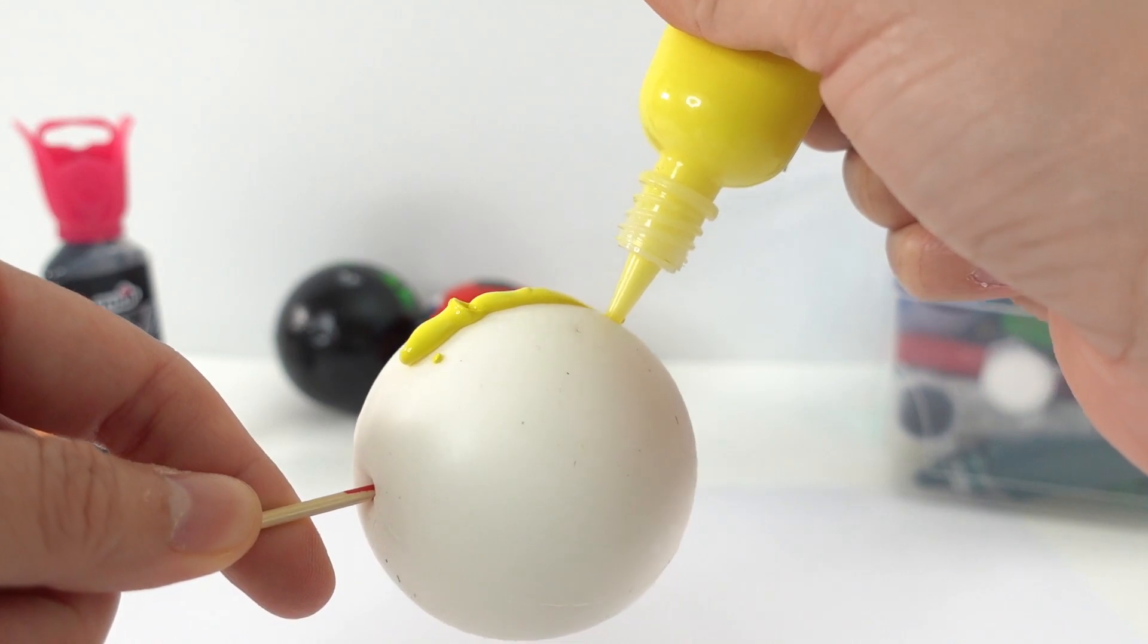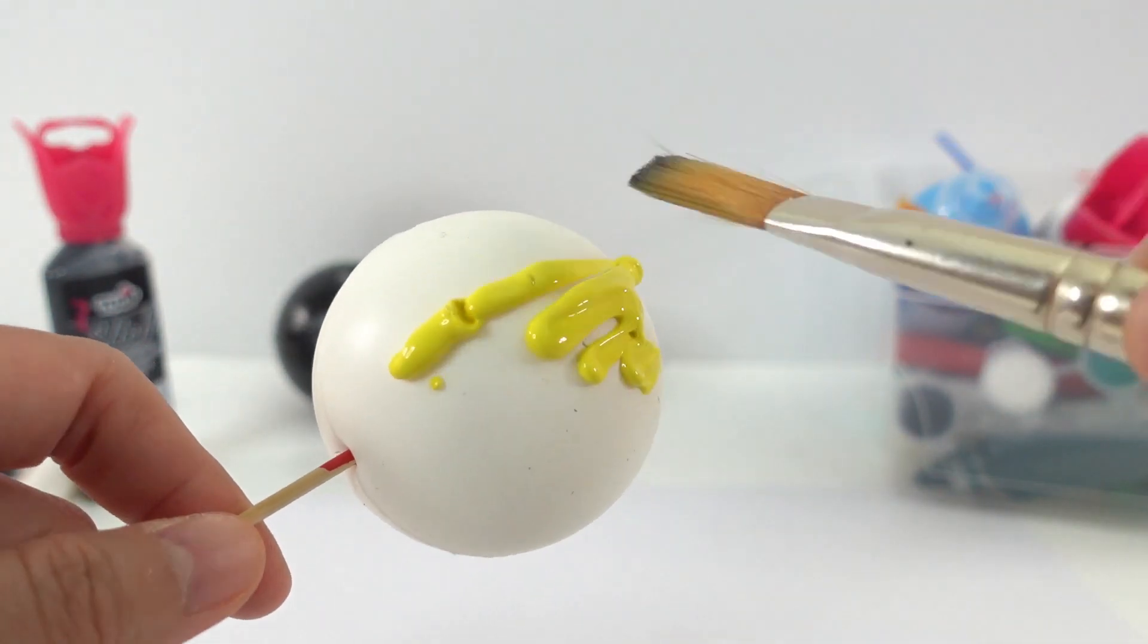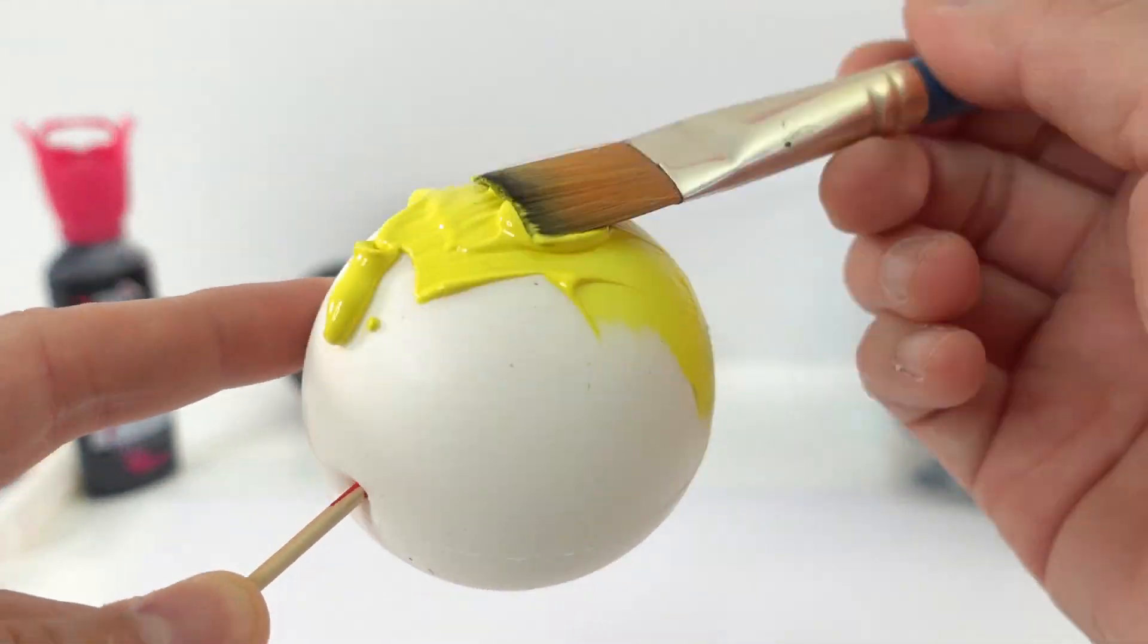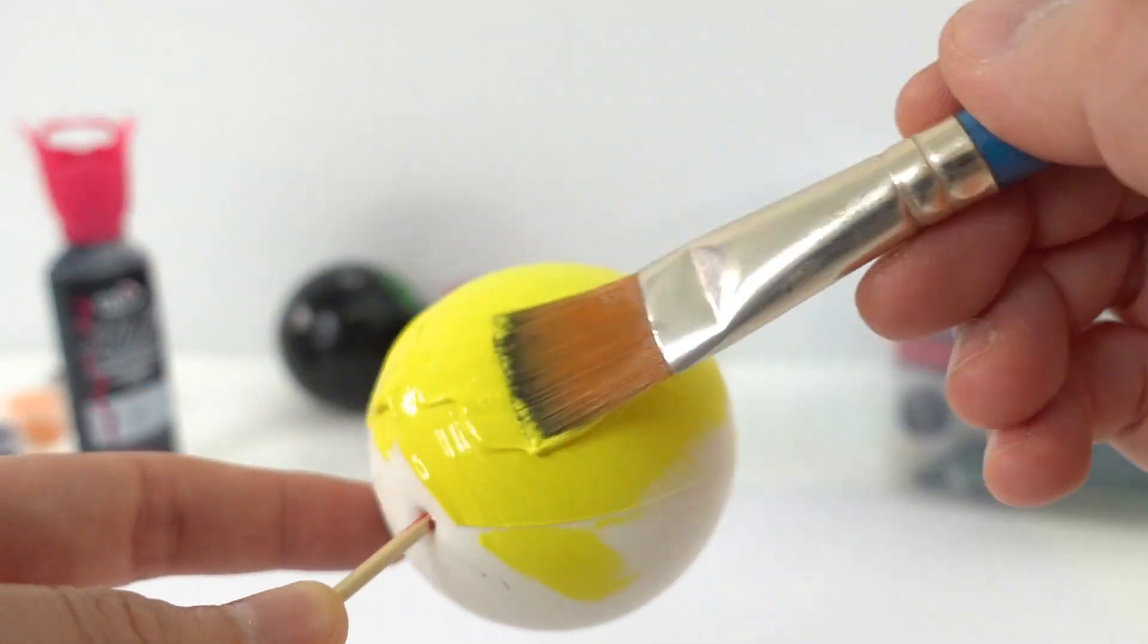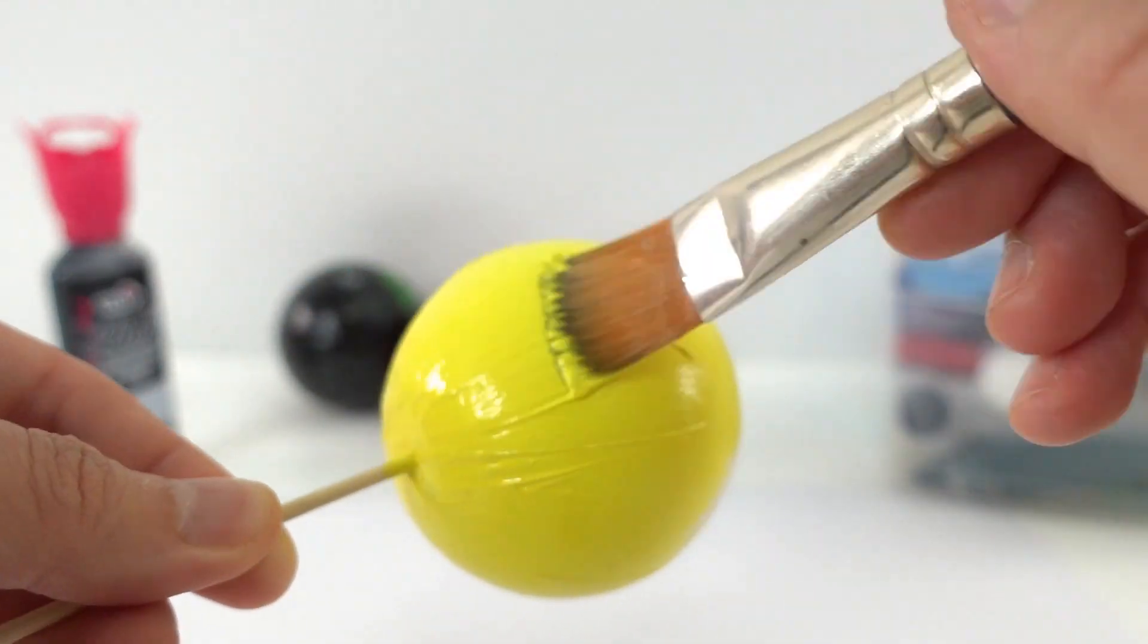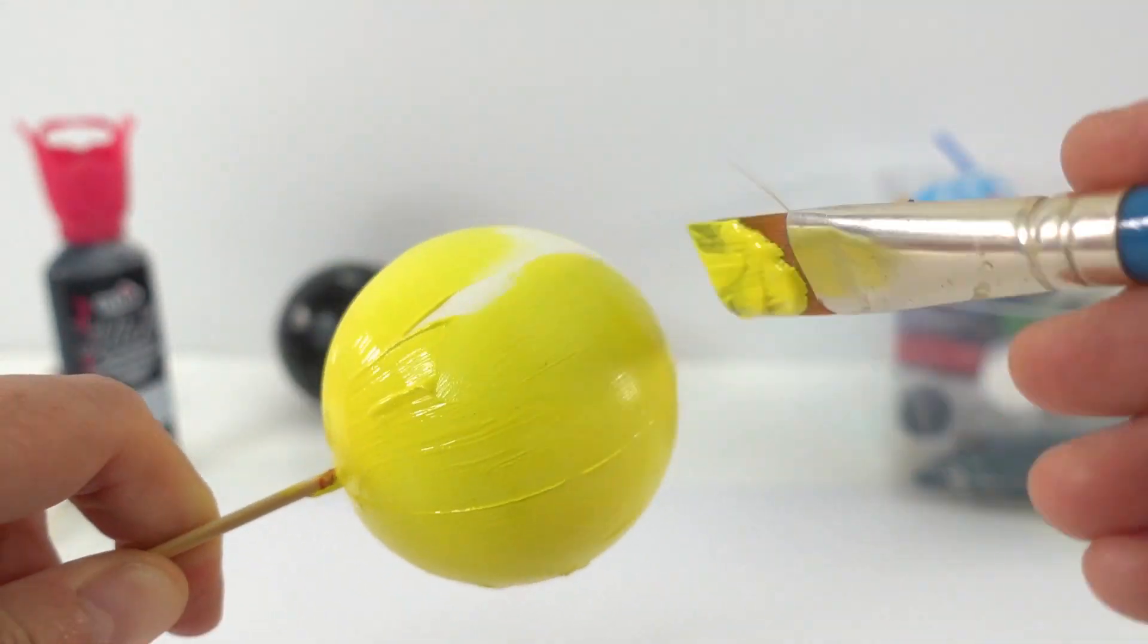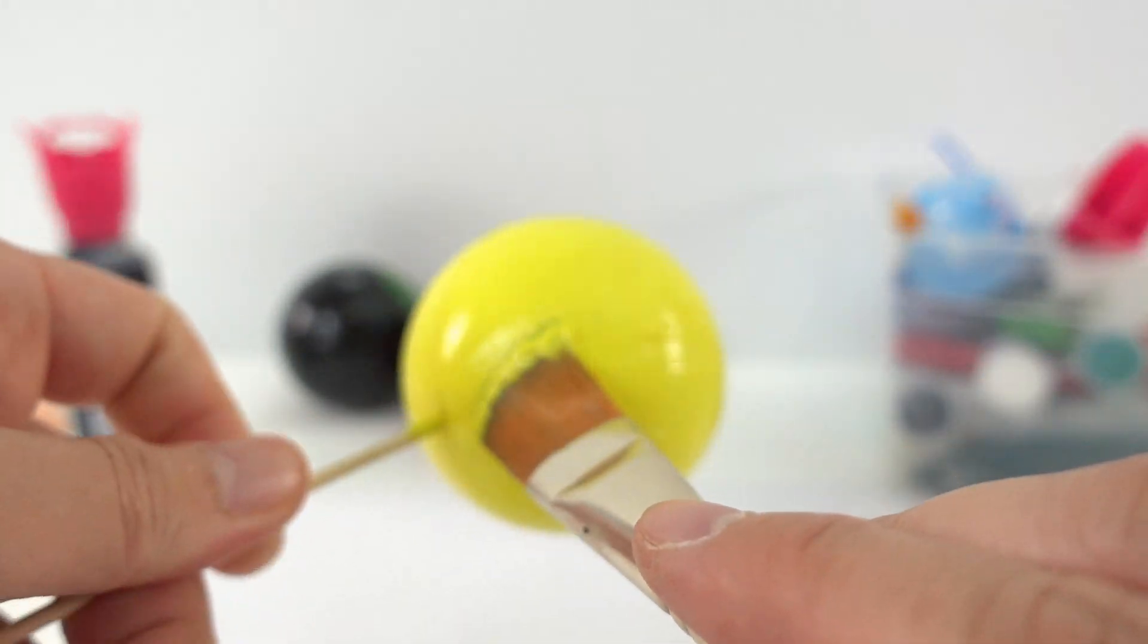Let's go ahead and take our puffy paint and give a nice thick layer of yellow on our first ball. We want this to be nice and thick, so we're gonna do about three layers so that we have a nice thick layer of paint. In between each layer we must make sure that the paint is dried, otherwise you'll get these really weird streak marks.